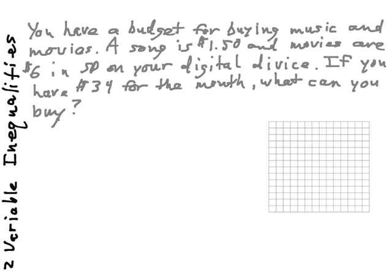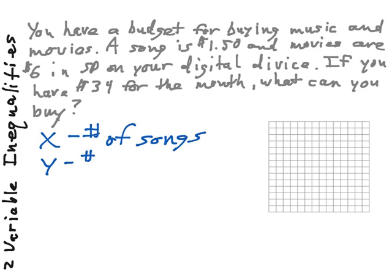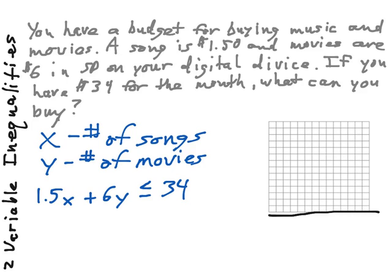If we have our x-axis represent the number of songs purchased and our y-axis represent the number of movies, we're going to have $1.50 for each song and $6 for each movie, and we have to be less than or equal to our budget of $34. So that's how we can take the idea and translate it into a workable equation. We obviously can't buy negative movies or negative songs. The content might be depressing or negative, but we can't go negative on the actual items. So we're going to set up our axes so that all we're looking at is quadrant 1.